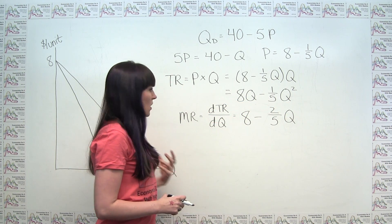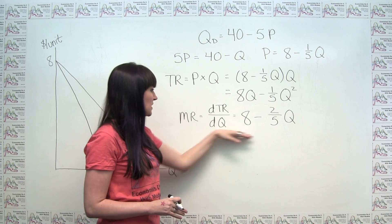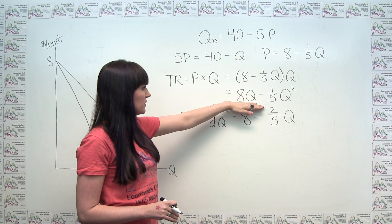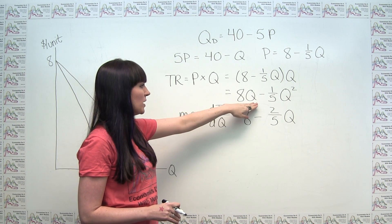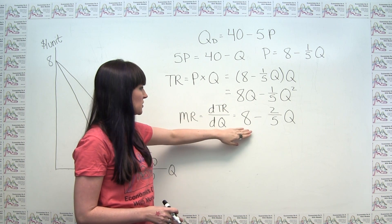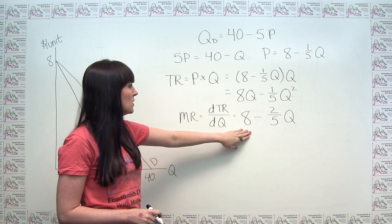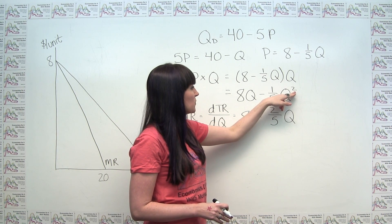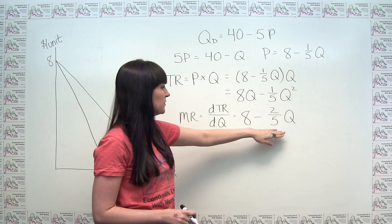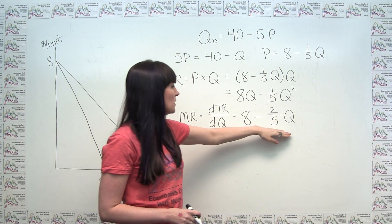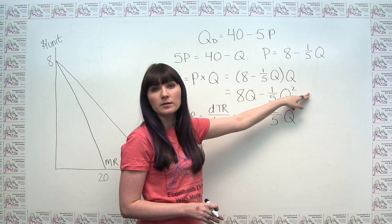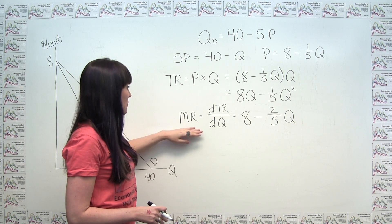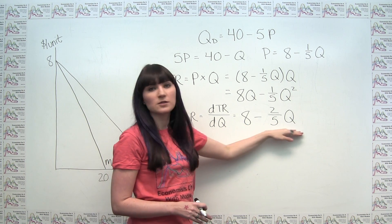Now we can use basic derivative rules to take this derivative. The derivative of 8Q is just 8, since we have a constant multiplying Q to the first power. Then for the Q squared term, 2 times one-fifth gives us two-fifths, times Q to the first power. So our marginal revenue curve is equal to 8 minus two-fifths Q.